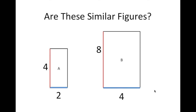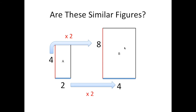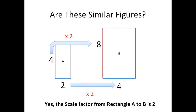So, we want to determine: are these figures similar? In order to do this, we look at whether there is a scale factor — a number that both corresponding sides are being multiplied by. Looking at rectangle A, the smaller one, we compare the blue corresponding sides: two and four. Two times two gives us four. Then for the red corresponding sides, four and eight: four times two is also eight. Both corresponding sides are being multiplied by the same number, so the scale factor from rectangle A to rectangle B is two. Therefore, this is a similar figure.